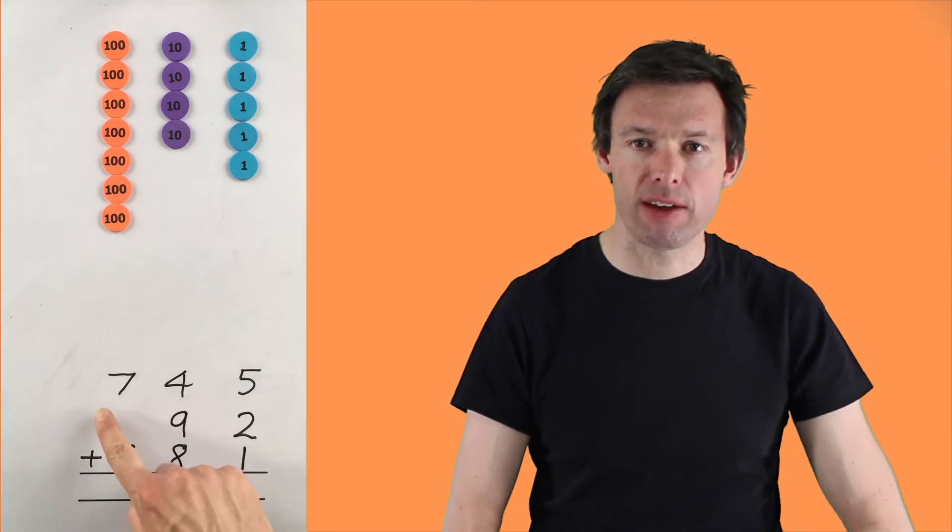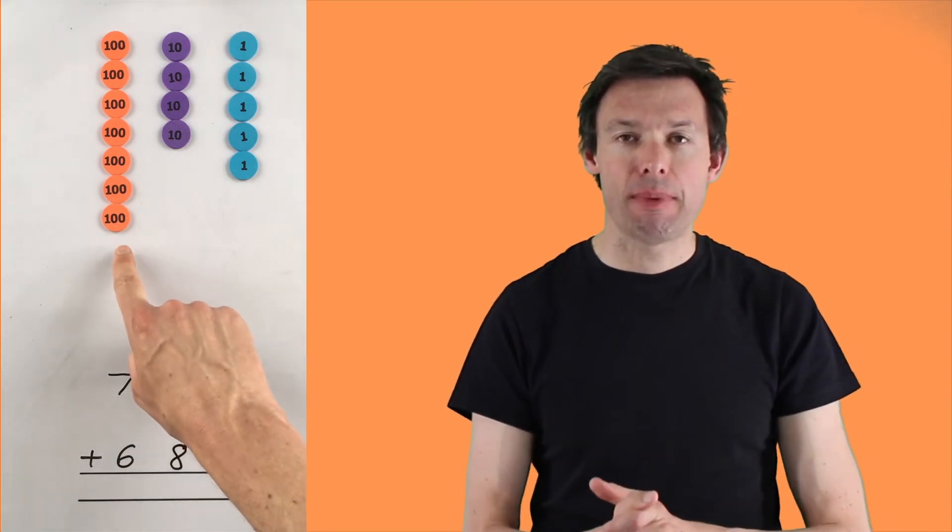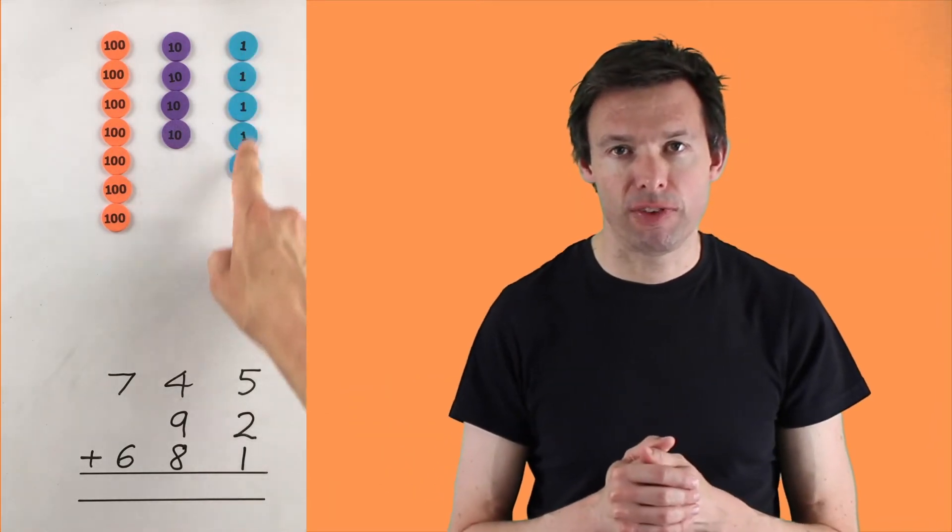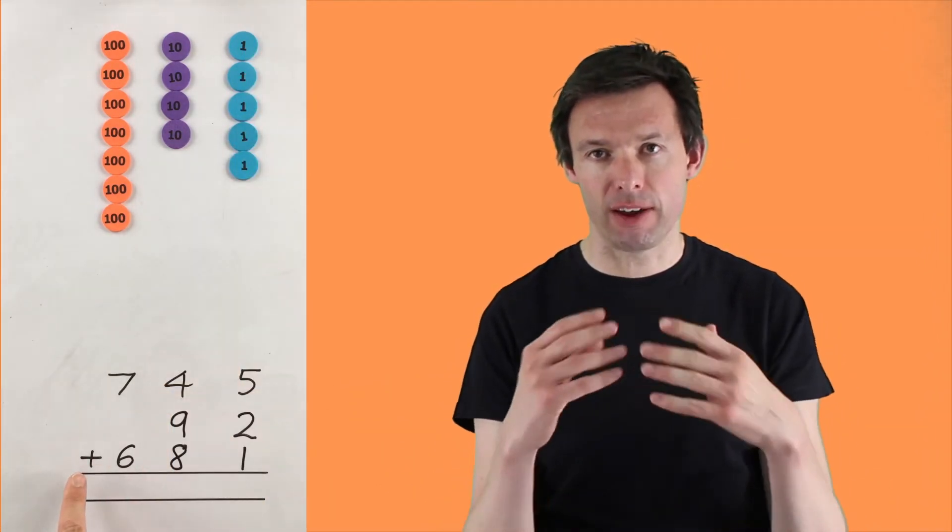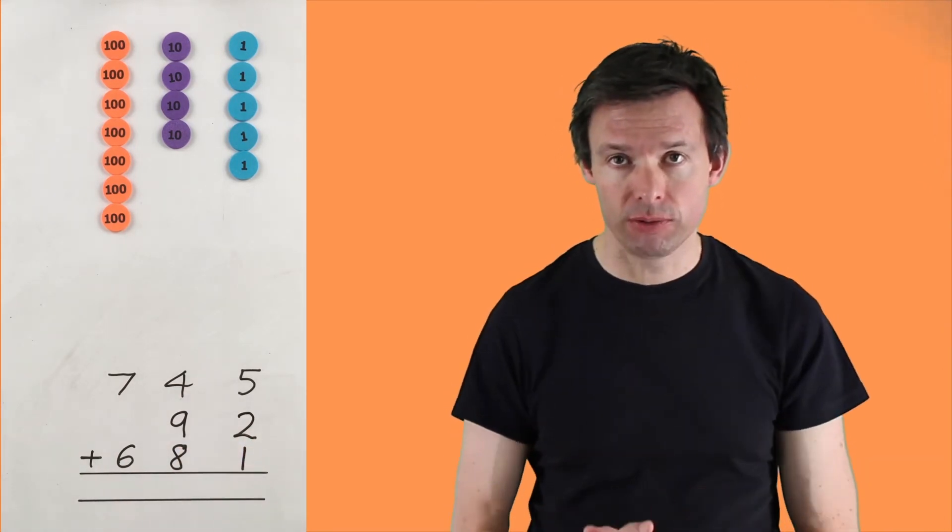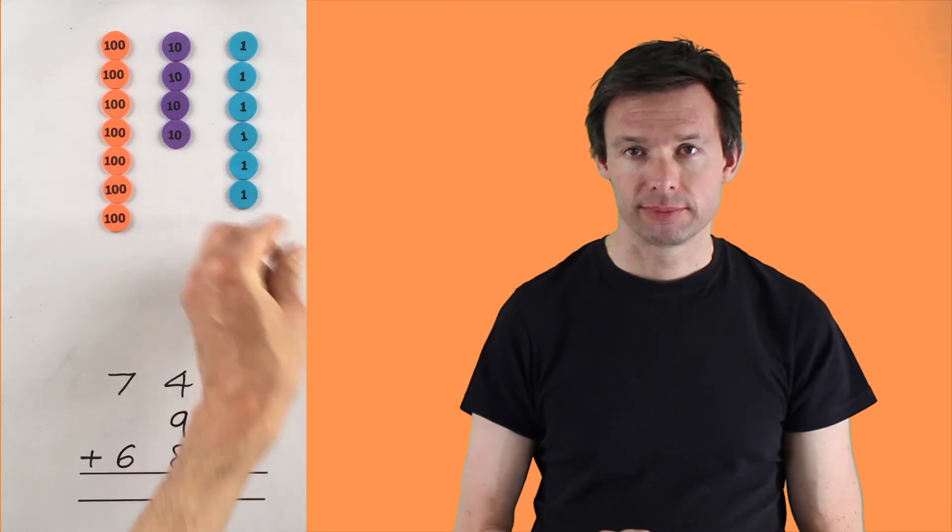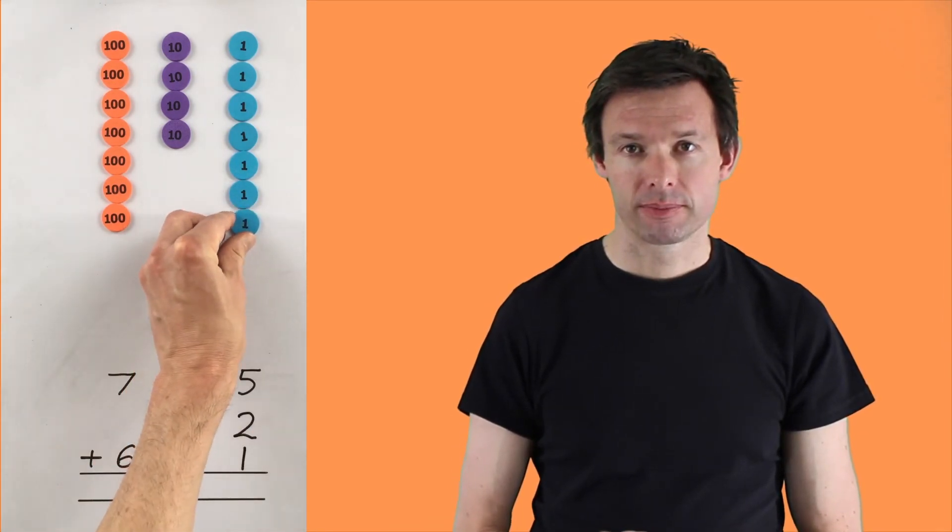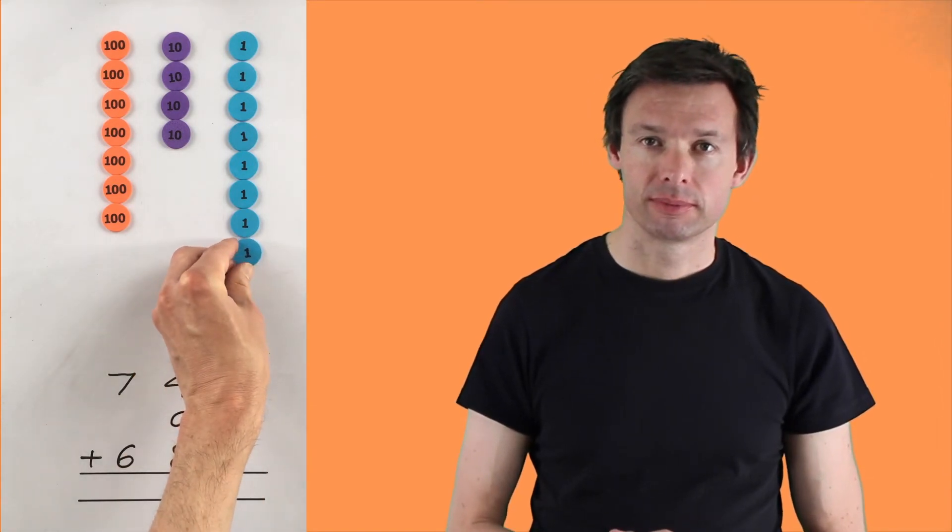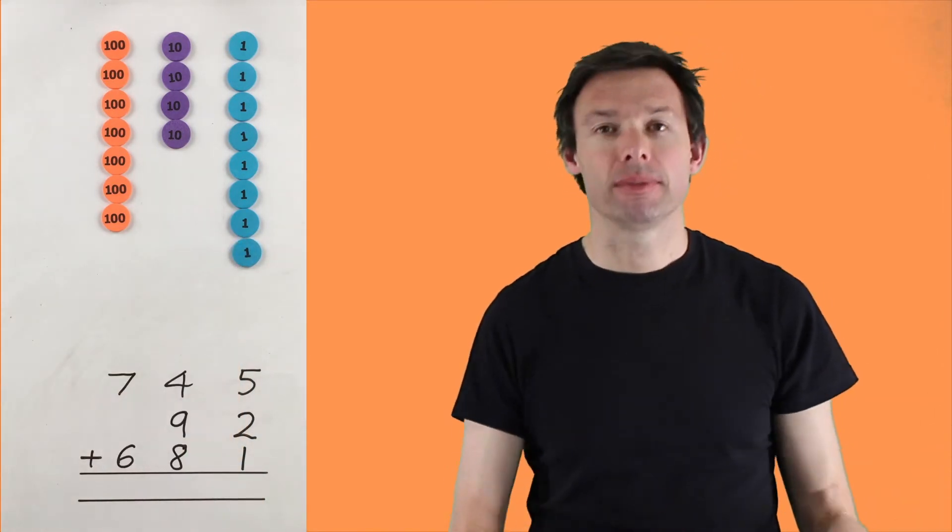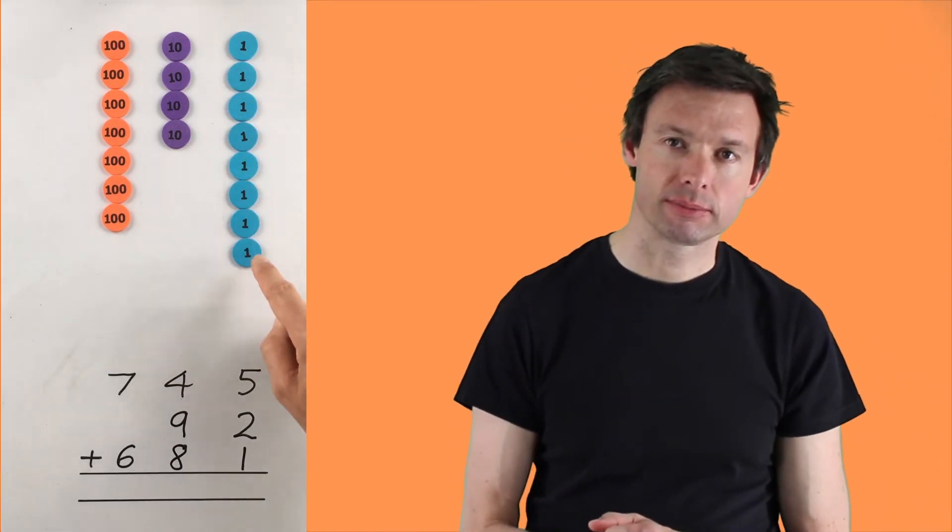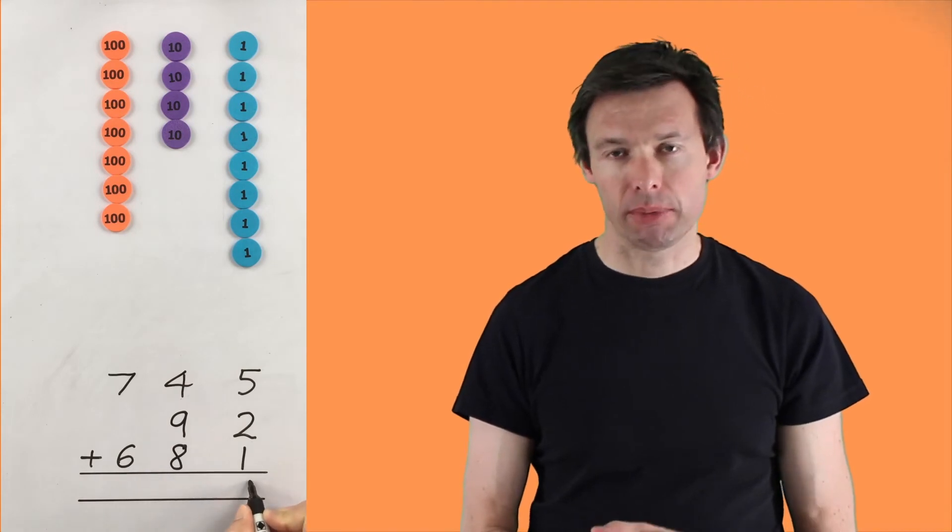Let's have a look and I'll show you what I mean with this example. So we've got 745, we're adding 92, and then we're adding 681. So we've started by making the number 745 with 7 hundreds, 4 tens and 5 ones. Now we add the ones. We've got 5 ones, add 2 ones first of all. And then we add another 1. Add them all up, and then you've got 8 ones. Nice and straightforward to get us started there. And you write your number like before.